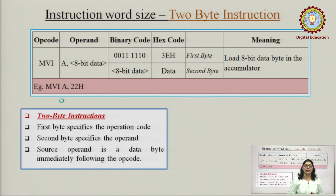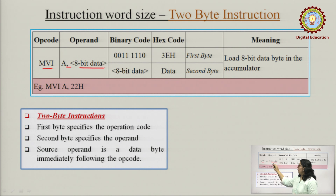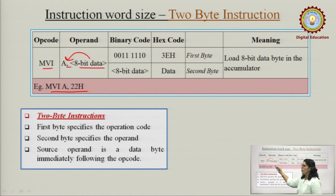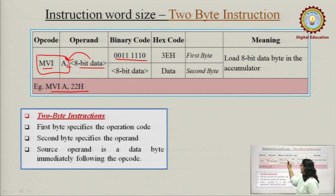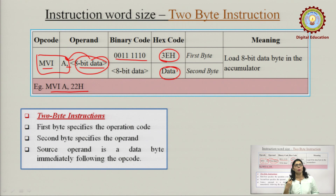Similarly, we have two byte instruction, jis mein hum apne instruction ko two bytes mein bhejenge. Like MVI A and some 8-bit data — toh accumulator mein hum koi 8-bit data directly input dena chahte hai. Pahli byte mein binary code jayega MVI A ka, which has a hexadecimal code. Aur doosari byte mein jayega hamara 8-bit data. So this becomes a two byte instruction.